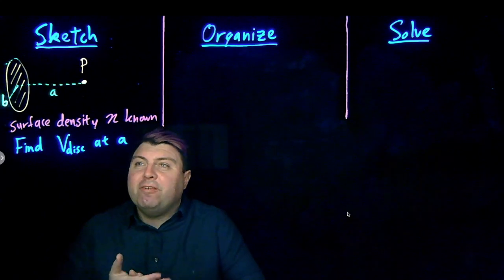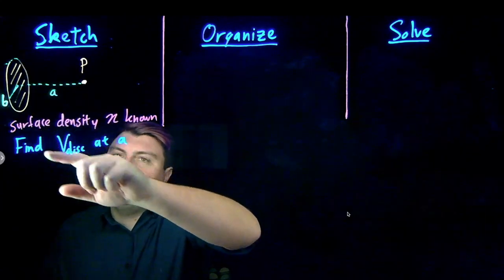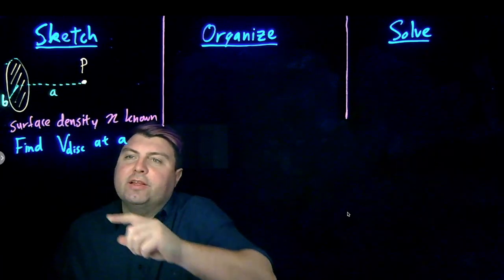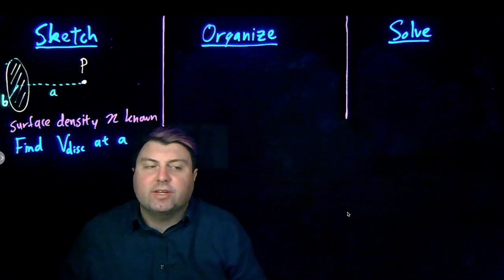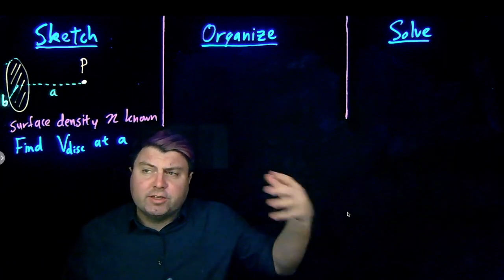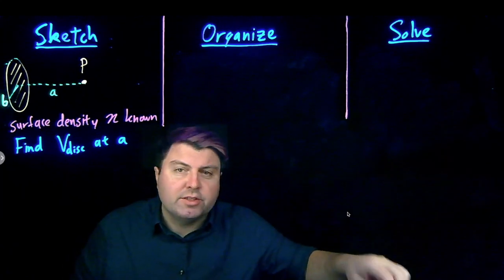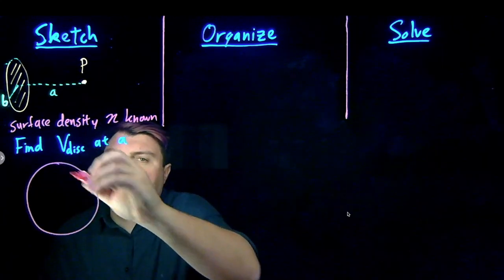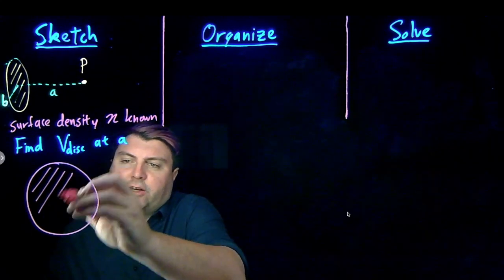Welcome. We have here a solid disk of radius b. We know its charge density eta, and we want to find the electric potential a distance a away from the center. One way we can do this is if we know the electric field, we can take a path integral, but another approach is to use superposition like we did for electric fields.